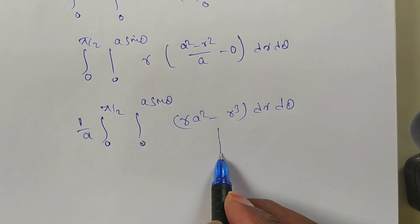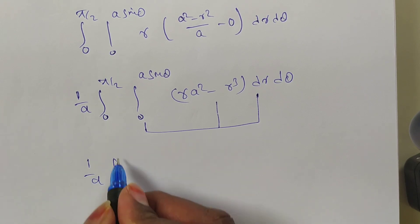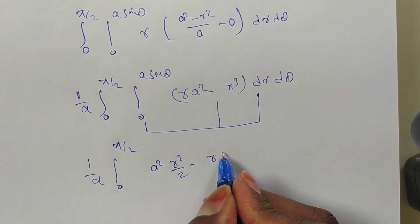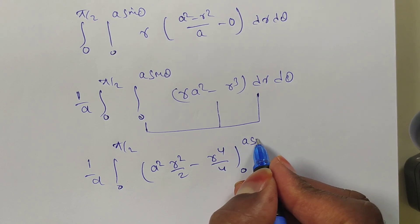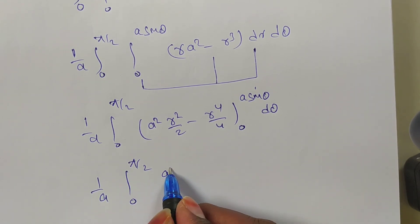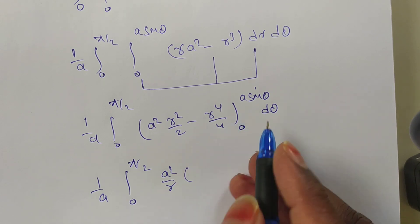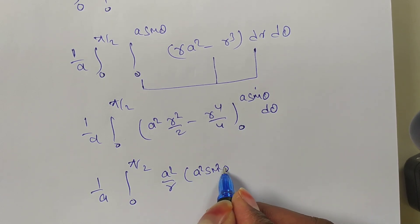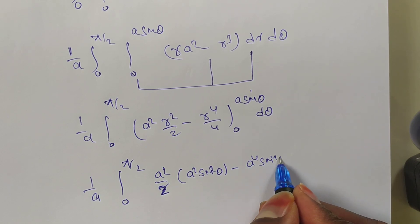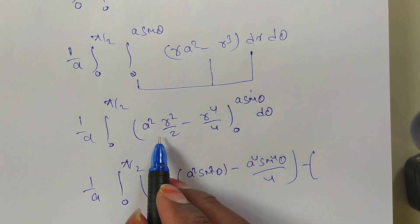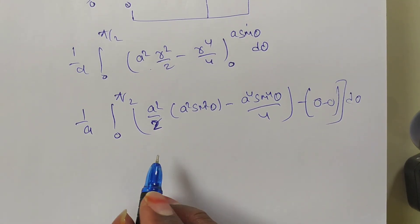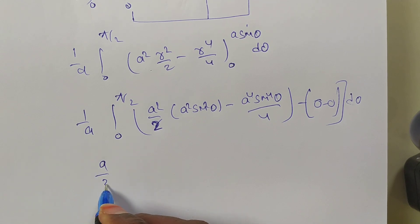Taking the constant 1/a outside, we integrate with respect to r: a² is a constant so a²·r integrates to a²r²/2, and r³ integrates to r⁴/4. Applying limits from 0 to a sinθ, the lower limit gives 0. Substituting the upper limit r = a sinθ, we get a²·(a sinθ)²/2 − (a sinθ)⁴/4, which gives a⁴sin²θ/2 − a⁴sin⁴θ/4 into dθ.